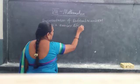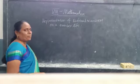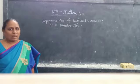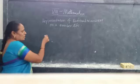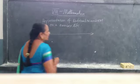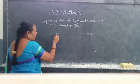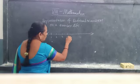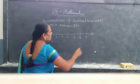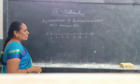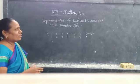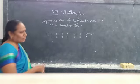Before we start this, you all know how to represent natural numbers, whole numbers, and integers on the number line — that we learned in the previous class. Let us see that once. How to represent natural numbers on the number line? 1, 2, 3, 4, 5, 6, 7 and so on. They are increasing. You can take as many as you want on the number line.